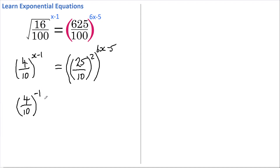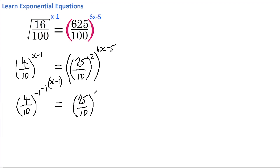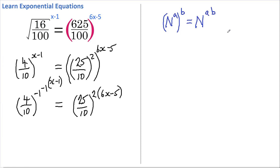To do that, I'm going to take 4 over 10 and raise it to the power of negative 1, and then raise it to the power of negative 1 again, and then raise it to the power of x minus 1. This all looks very complicated, but all it means is I'm inverting it and then inverting it again — so there's no overall effect. This then equals 25 over 10 to the power of 2, and I bring the 6x minus 5 down using the rule that a number raised to a power, all raised to another power, equals that number raised to the product of the powers.